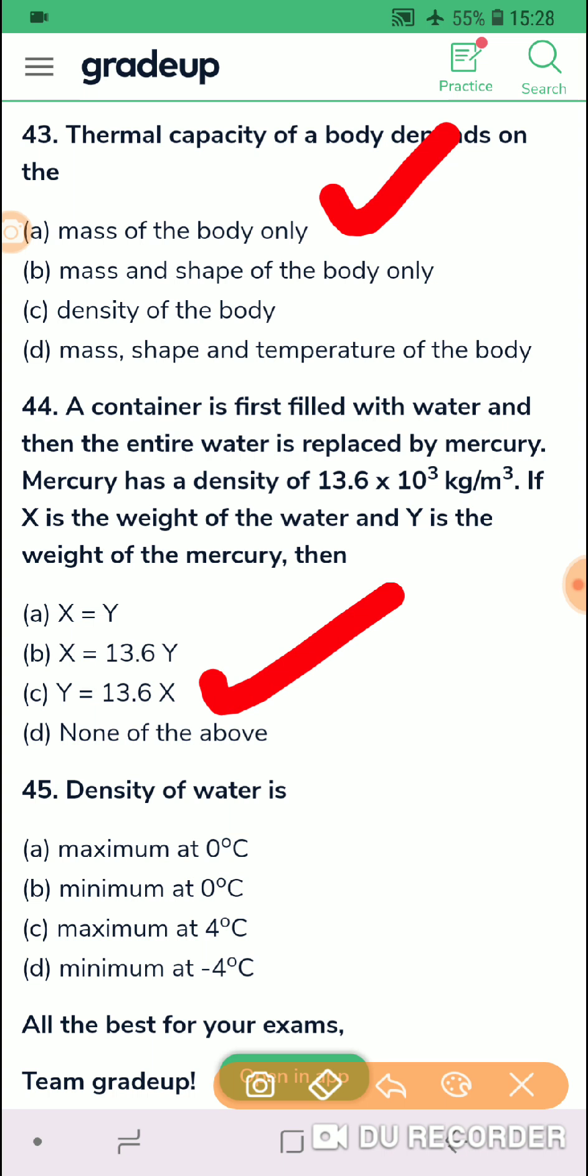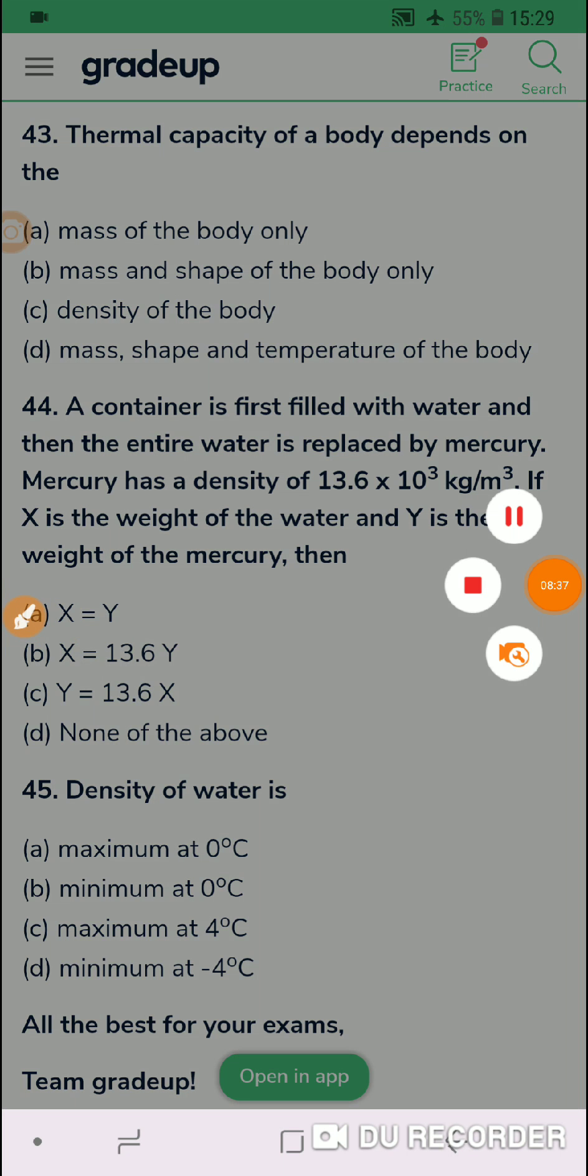Now density of water is, density of water is maximum at 4 degree Celsius. You people need to remember this, density of water is maximum at 4 degree Celsius. Anyway, all the best for your exam and you do practice and repeat these questions.